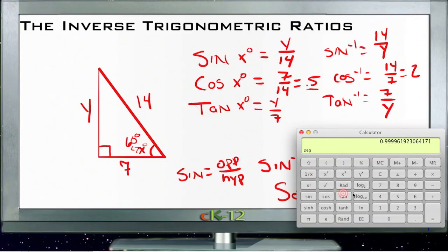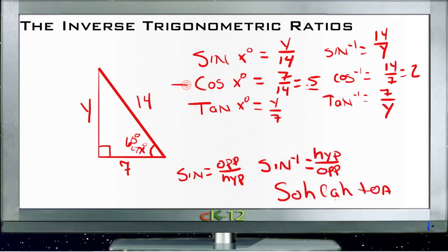So using the inverse sine is how we actually find a missing degree measure when we know the sine, cosine, or tangent. We take whatever that measure is, whatever that value is, and then multiply it by the inverse of whatever ratio we're using. So if we find the cosine 0.5 of our degree measure, we use the inverse cosine to find it. If we find the tangent of a specific degree measure and we want that degree measure, we use the inverse tangent to find it.